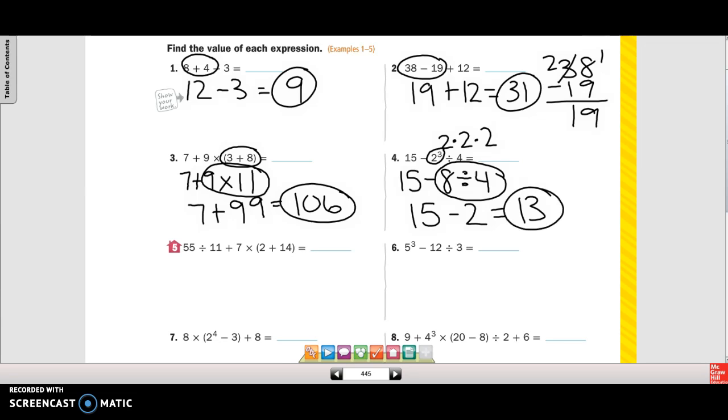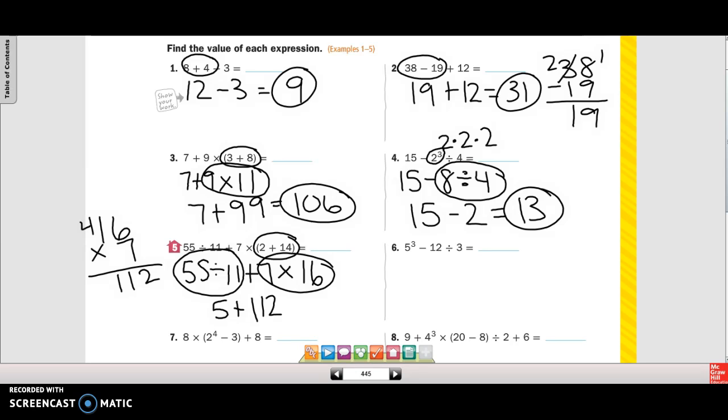And our next one, we do have parentheses, so we're going to do that first. So let's rewrite the rest of it. 2 plus 14 is 16. Now we're going to do 55 divided by 11, which is 5, plus 7 times 16. So I have 5 plus 112, which equals 117 as your answer.